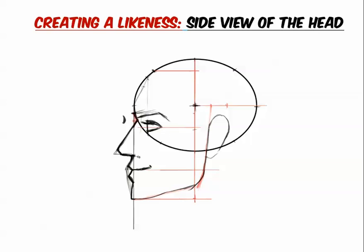All we want to do now is draw the nostril and the wings of the nose right there. We're getting pretty close to finishing the side view of the head. Just shade that in a bit — there we go, looking better.